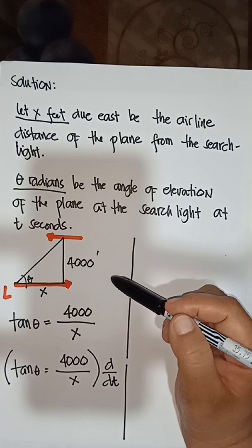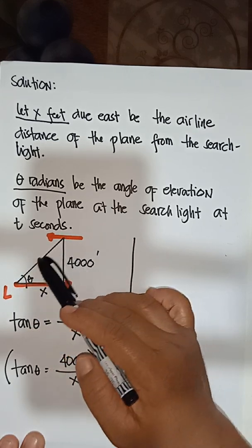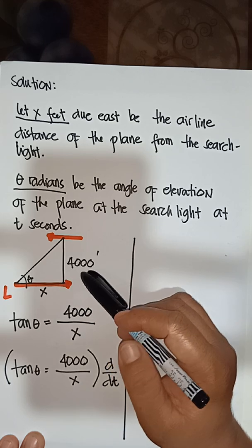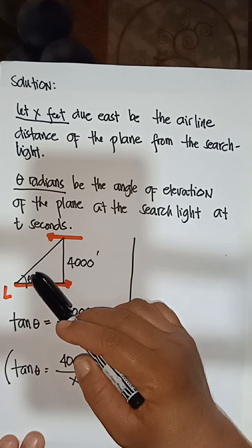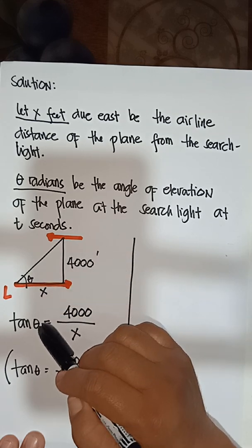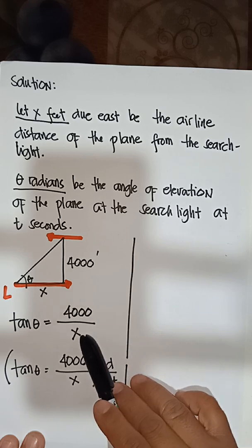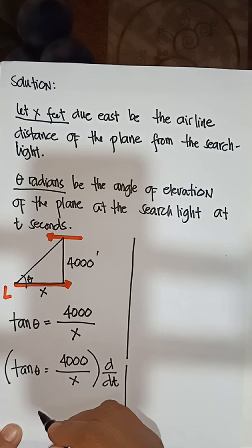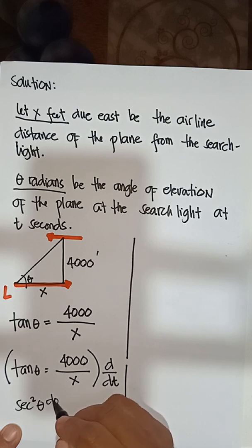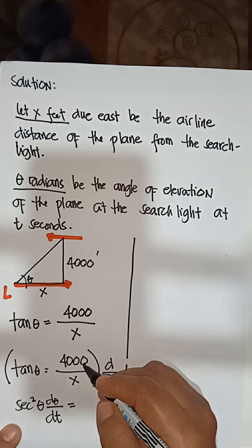We use tangent because it involves the opposite side over the base. The formula of the Pythagorean theorem — z² = x² + y² — only solves for sides. Since we are solving for the rate of change of the angle, we use the trigonometric function: tan θ = 4000 / x. Taking the derivative of both sides with respect to time.